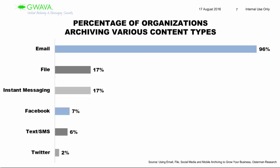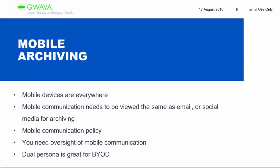Moving on to mobile and social media — let's do mobile first. We do need to archive mobile, but what's the advice for how to do that, especially when it comes to BYOD — bring your own device? Most people are dealing with staff bringing their own device to work and wanting to access email, access the network, or communicate via text messages with other staff or students. Mobile communication needs to be viewed the same as email or social media. The basis of all this is you need to have a policy for mobile communication.